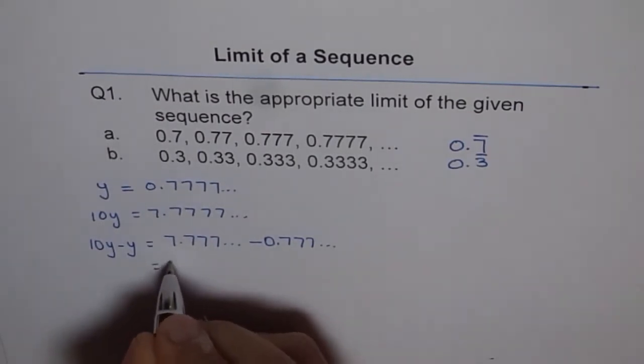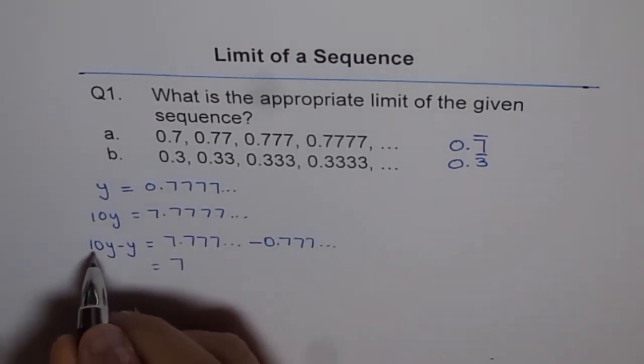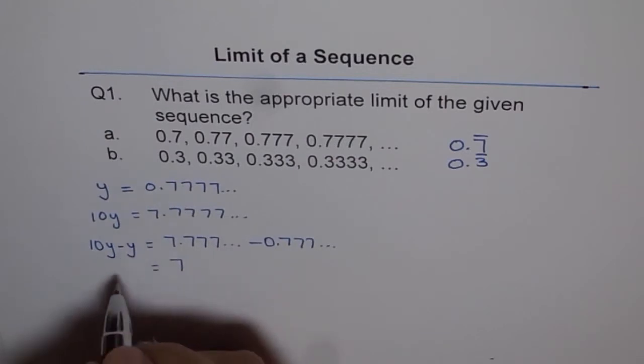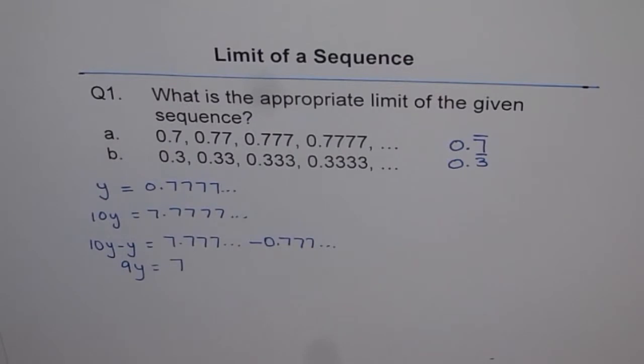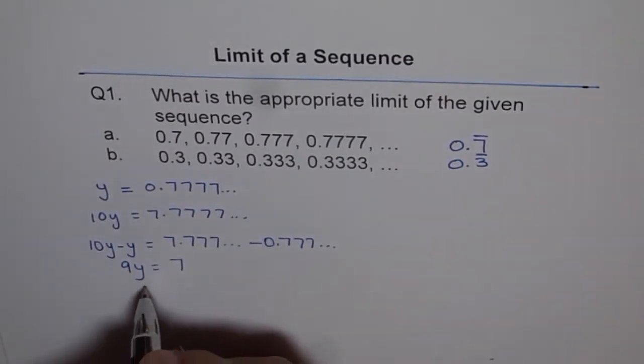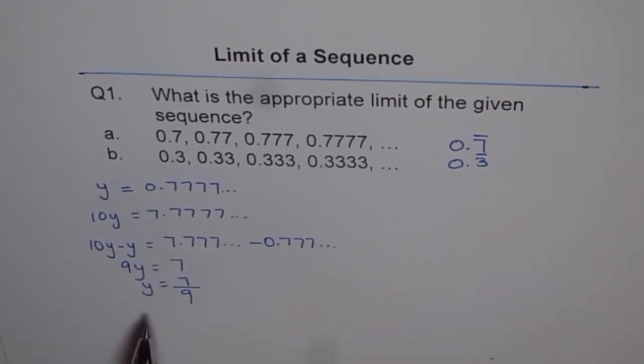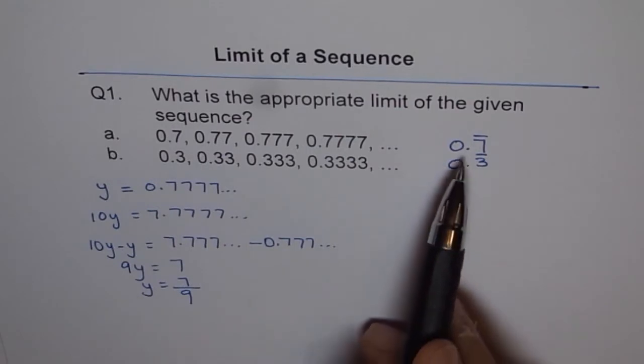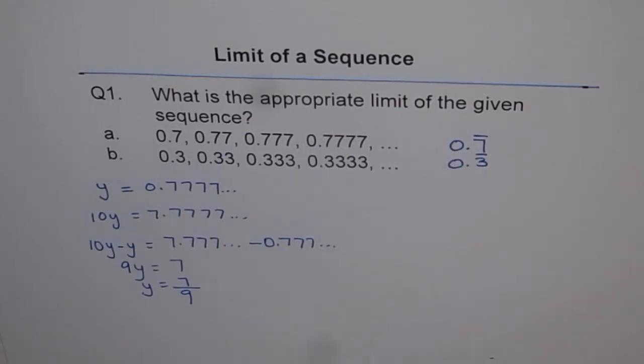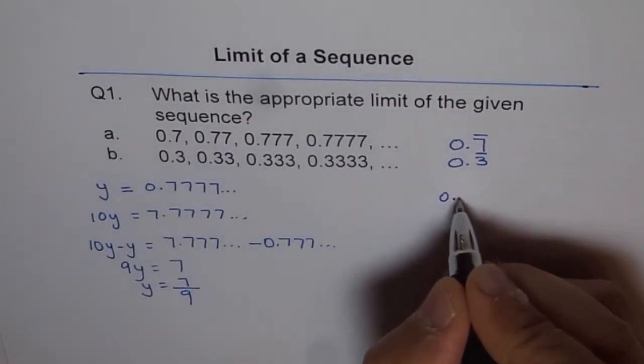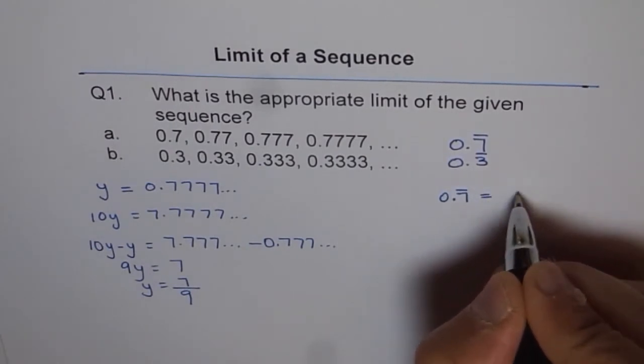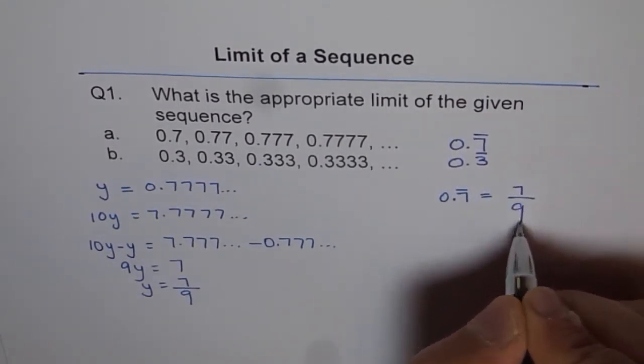So we get 7 equals 10 minus 1y, which is 9y. So 9y equals 7. What is y equals to? We get y equals 7 over 9. That is the value which represents 0.7 recurring. So 0.7 recurring is actually equals to 7 over 9.